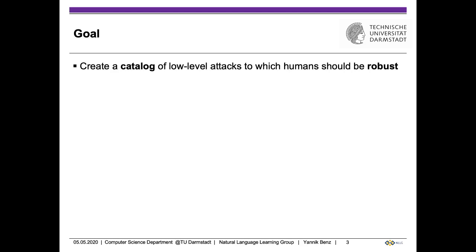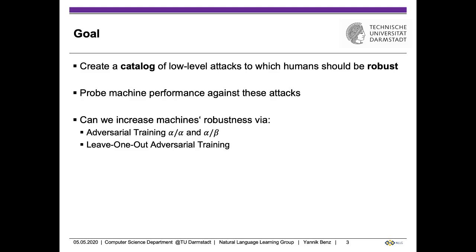The goal of this work is to make a catalog of low-level attacks to which humans are robust and evaluate existing state-of-the-art system performance on a subset of NLP tasks against these attacks. We also evaluate three different adversarial training approaches to shield machines and make them more robust against these types of attacks. We adversarially train in three different manners: training on the same perturbation we evaluate on later, training on a different perturbation, and in a leave-one-out fashion where we train on all perturbations except the one we evaluate on.